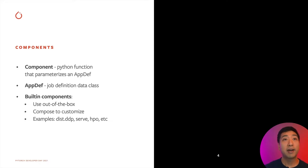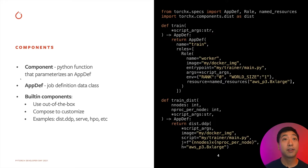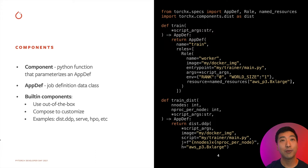A component in TorchX is a Python function that returns a well-defined job specification called an AppDef. An AppDef is a Python data class that holds all of the necessary information to run an application as a job. On the right-hand side are two components: train and train_dist. Both are Python functions that take parameters and return an AppDef. Train specifies a single node job that runs the entry point my/trainer/main.py in a container created from image my/docker_image. Additionally, it sets environment variables rank and role size to zero and one accordingly, and requests resource requirements equal to those of a p3.8xlarge instance type on AWS.